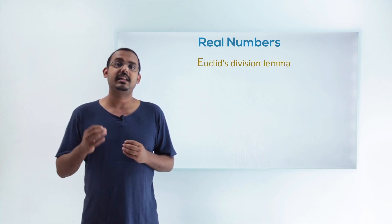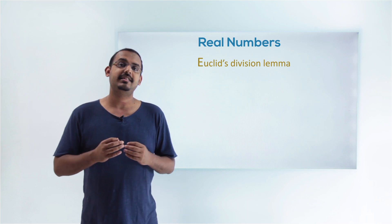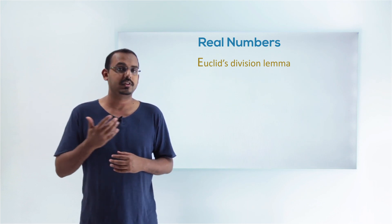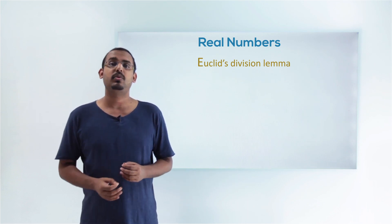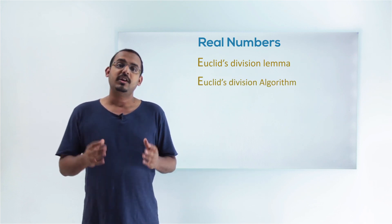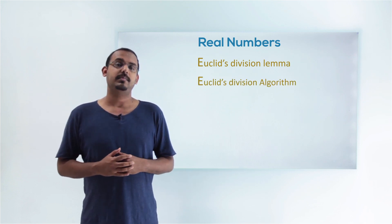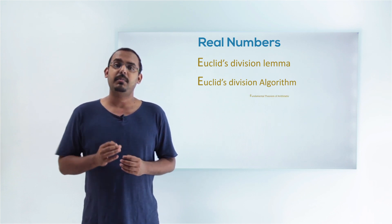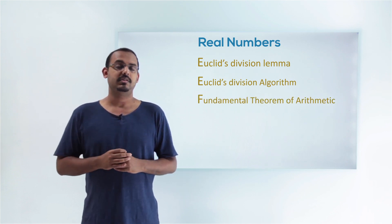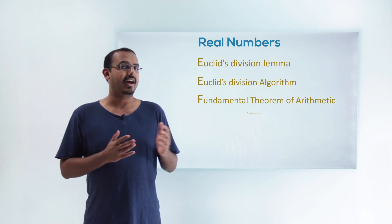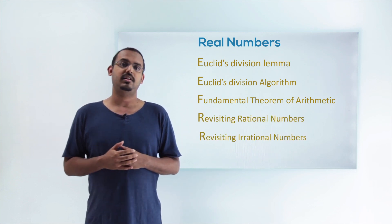We'll be starting with Euclid's division lemma. Once we understand what Euclid's division lemma is and how we use it, we'll go on to study about Euclid's division algorithm. Once we are through with both these concepts, we'll learn about the fundamental theory of numbers. After that, we'll move on to study a little about rational numbers and a little about irrational numbers.